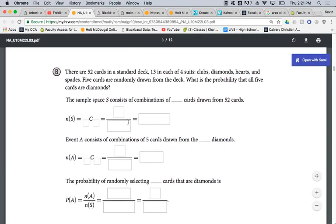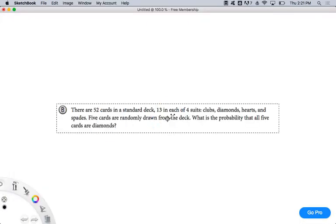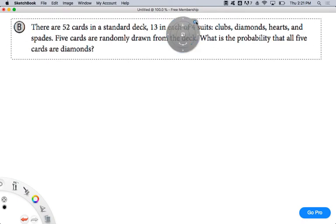Next page is example B. There are 52 cards in a standard deck, 13 in each of four suits, clubs, diamonds, hearts, and spades. Five cards are randomly drawn from the deck. What's the probability that all five cards are diamonds? Put your math in your deck.